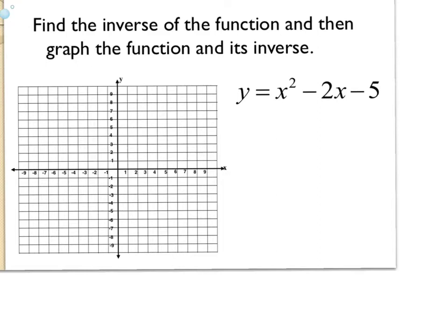The first thing that we need to identify is the fact that this guy has two x's in different spots. We've got the square and then the linear term, and this causes problems when we're attempting to find an inverse of a quadratic. So the first thing that we need to do is complete the square.